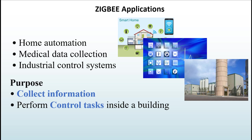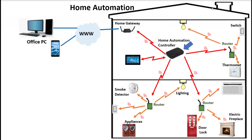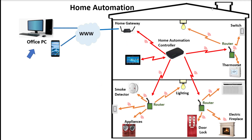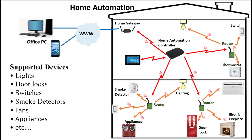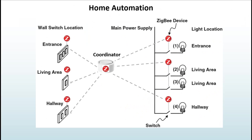In Zigbee home automation, we have a home automation controller with a software application that controls smart devices. The controller is also called a central hub. The gateway is the interface between the Zigbee network and the web — it is connected to the internet and lets the homeowner control smart home devices from virtually anywhere in the world.